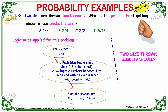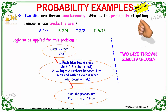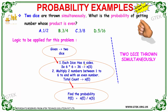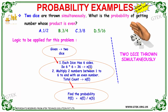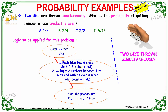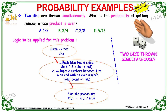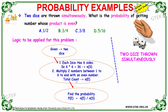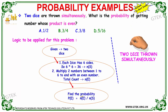The logic is we need to identify the two dice. Each die has six sides, so the sample space — the number of possible outcomes — is 6 times 6, that's 36. We need to multiply two numbers between one and six to end with an even number. The probability is the number of favorable events divided by the sample space.